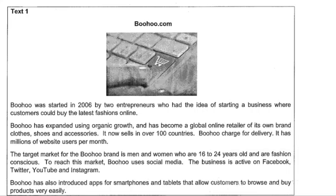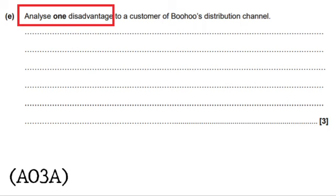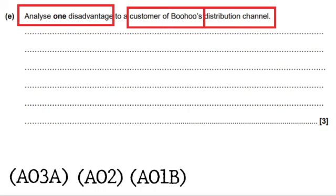The next example is Boohoo. The question is: analyse one disadvantage to a customer of Boohoo's distribution channel. Distribution is part of the marketing mix — place. I have to show the examiner I understand that. I'm looking at one disadvantage and trying to get AO3A analysis. For AO2 I have to think about the customer of Boohoo. And again, AO1B is the most important — without it, I won't get AO2 or AO3A. If you do not show knowledge and understanding of distribution channels, you're not going to get any marks.